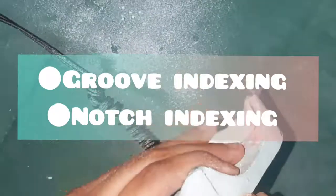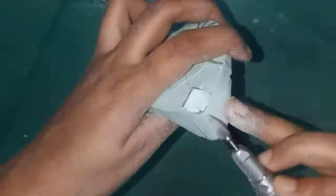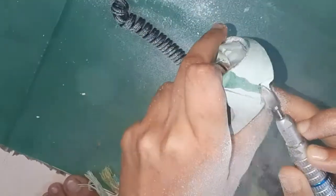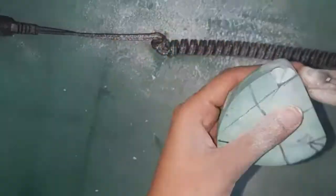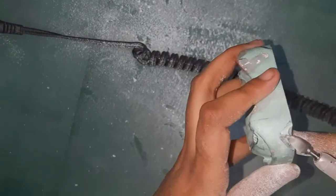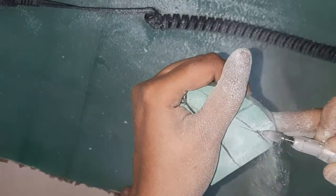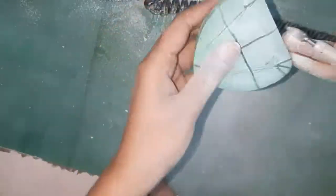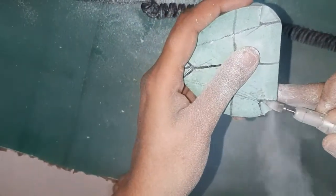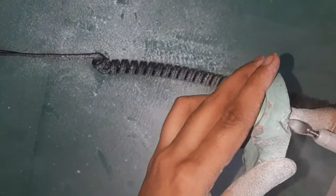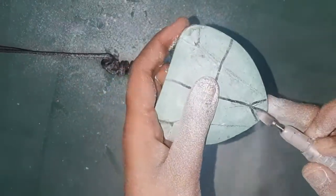notch indexing. In notch indexing, three V-shaped notches are marked on the base of the cast, one in the anterior and two in the posterior. The notch should be three mm depth and five mm width. You can make this notch with the help of a burr, chisel, and also by the BB plate.